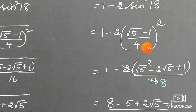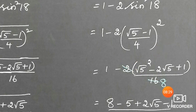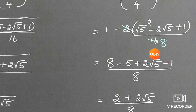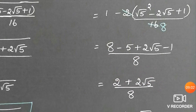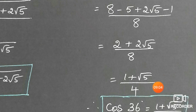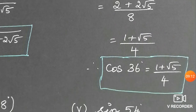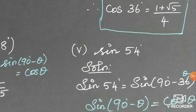Expanding: (√5 − 1)² = 5 − 2√5 + 1 = 6 − 2√5. So sin²18° = (6 − 2√5)/16. Then 2sin²18° = (6 − 2√5)/8. Now cos 36° = 1 − (6 − 2√5)/8 = (8 − 6 + 2√5)/8 = (2 + 2√5)/8 = 2(1 + √5)/8 = (1 + √5)/4. Therefore, cos 36° = (1 + √5) / 4.